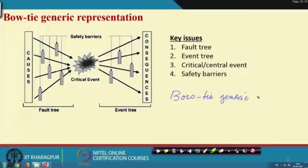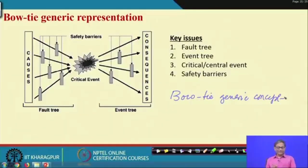I hope that by 30 to 35 minutes we will be able to finish it. It is very interesting and will give you the preventive barriers. In today's lecture we will be talking about barriers for prevention. This slide is about the bow tie generic concept.